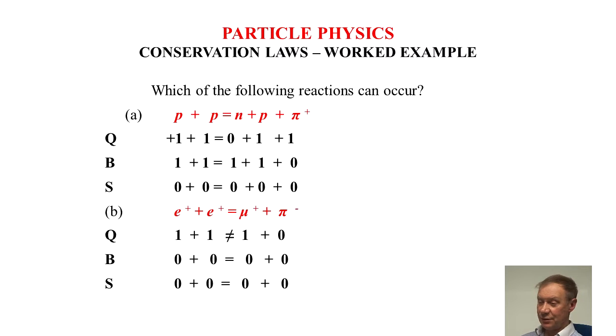So here's a worked example on conservation laws. First of all A, which of the following reactions can occur? In the case of A, P plus P is equal to N plus P plus pi plus. That may seem not to balance but we'll have a look at it. In the case of charge, plus one and plus one is on the left hand side.